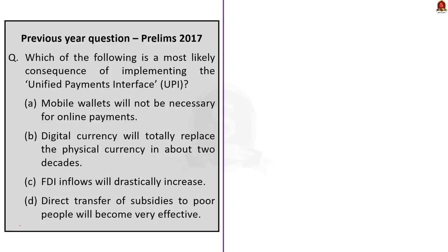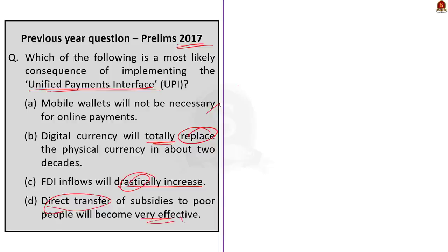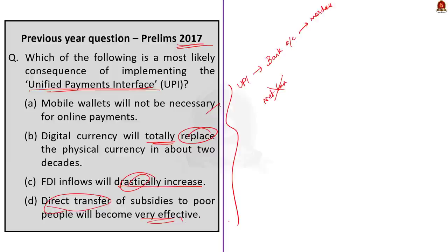Question three — this is a 2017 Prelims question: Which of the following is the most likely consequence of implementing Unified Payments Interface or UPI? Option A: Mobile wallets will not be necessary for online payments. Option B: Digital currency will totally replace physical currency in about two decades. Option C: FDI inflows will drastically increase. Option D: Direct transfers of subsidies to poor people will become very effective. UPI allows a customer to pay directly from a bank account to different merchants, so there is no hassle of typing card details or IFSC code, and you don't have to rely on net banking or mobile wallets. The correct answer is option A.